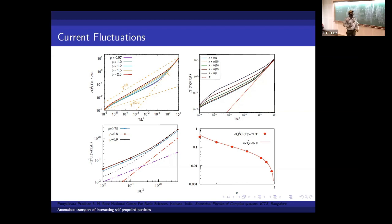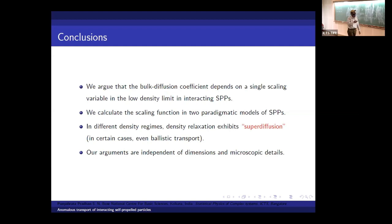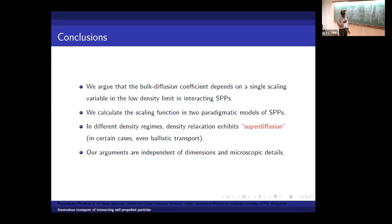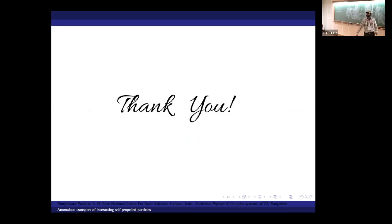In summary: we argue that the bulk diffusion coefficient depends on a single scaling variable in the low-density limit for interacting self-propelled particles. We calculate the scaling function in two paradigmatic models of SPPs. In different density regimes, density relaxation can exhibit super-diffusive or even ballistic transport due to the power-law dependence of diffusivity on density, and our arguments are believed to be independent of dimensions and microscopic details. Thanks for your kind attention.